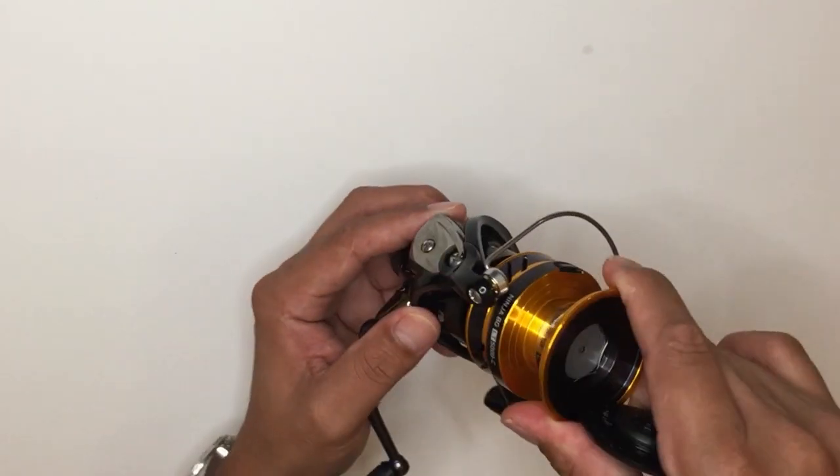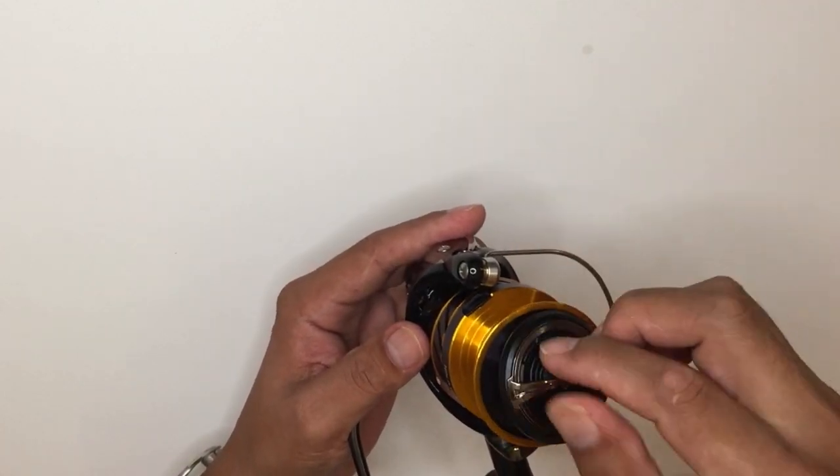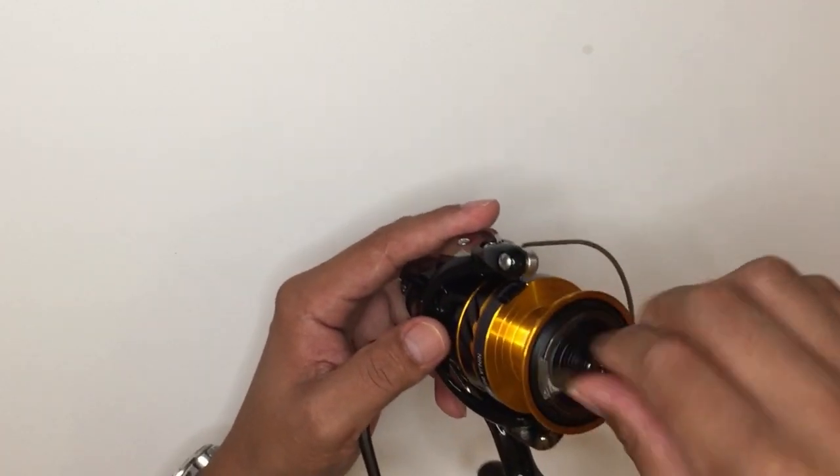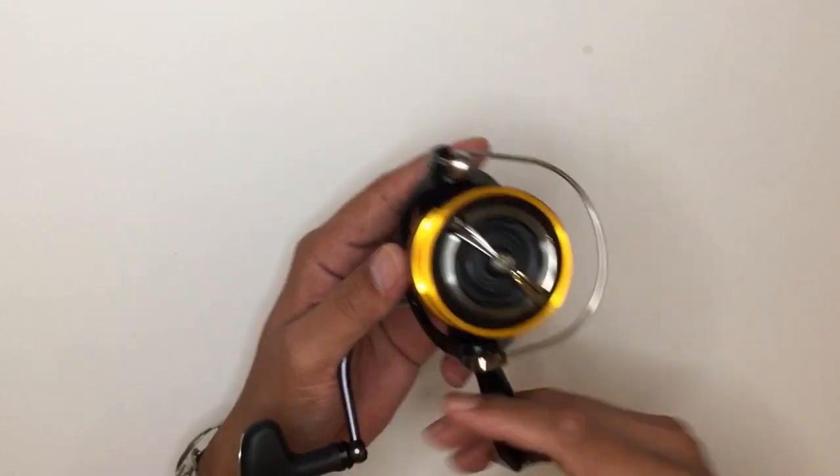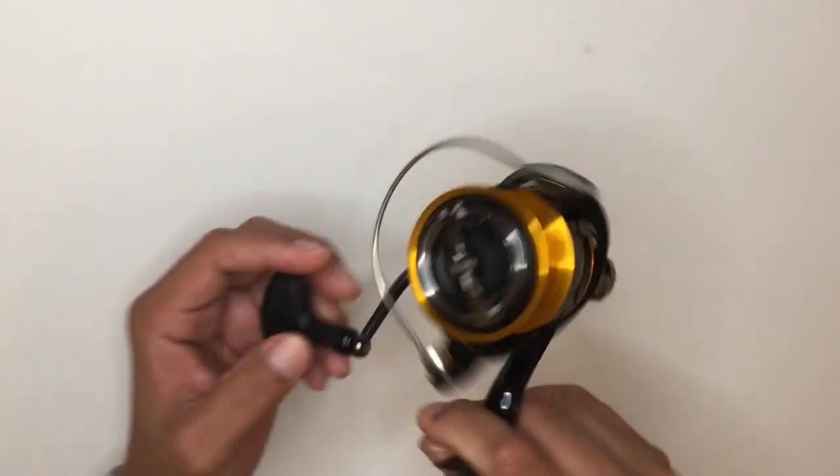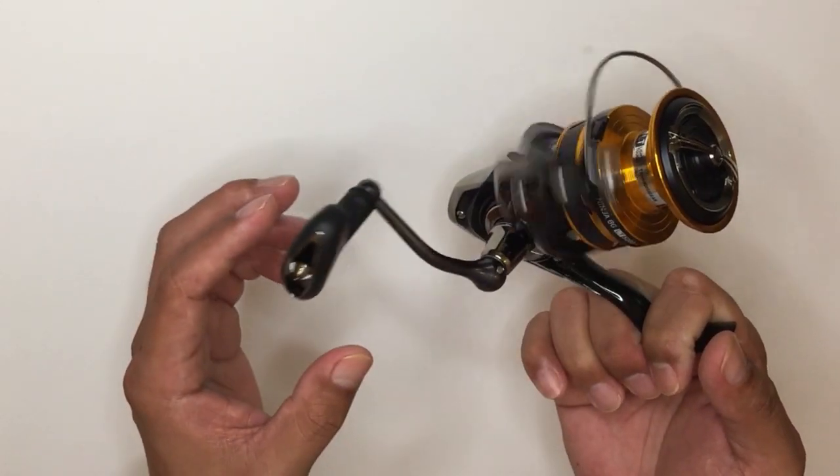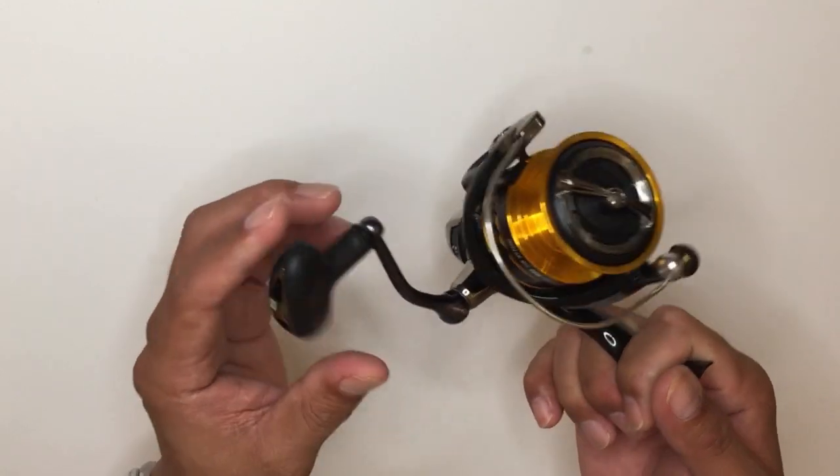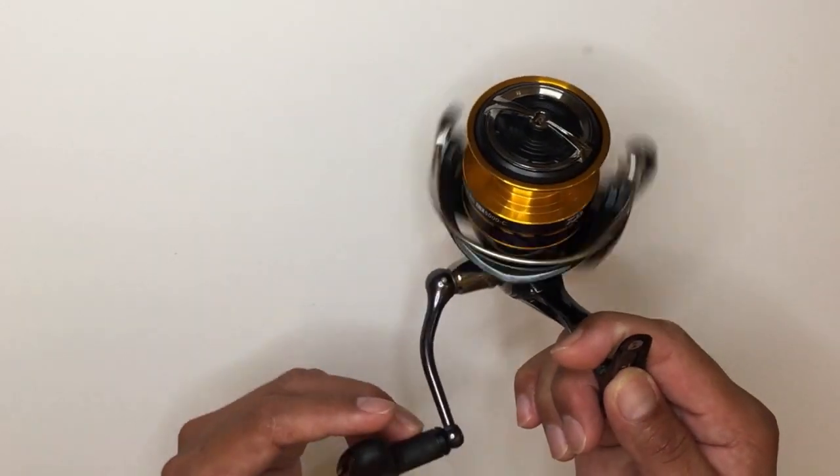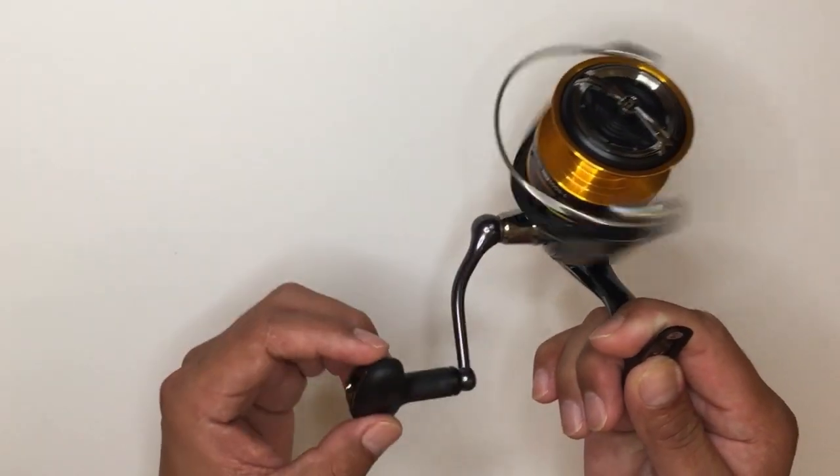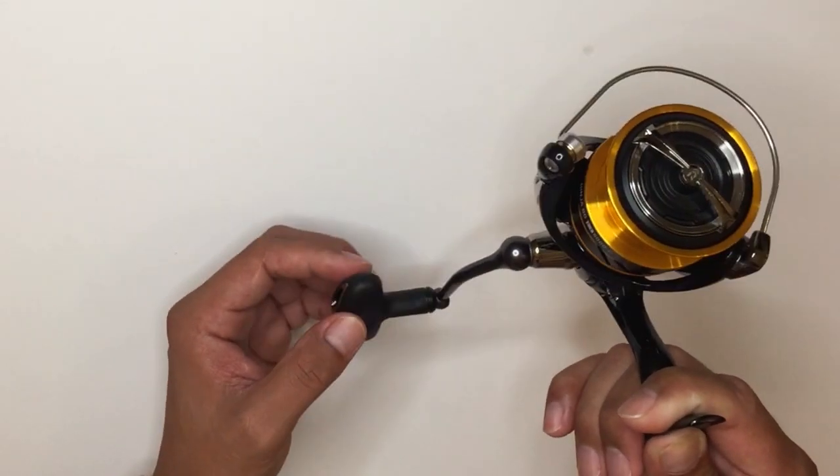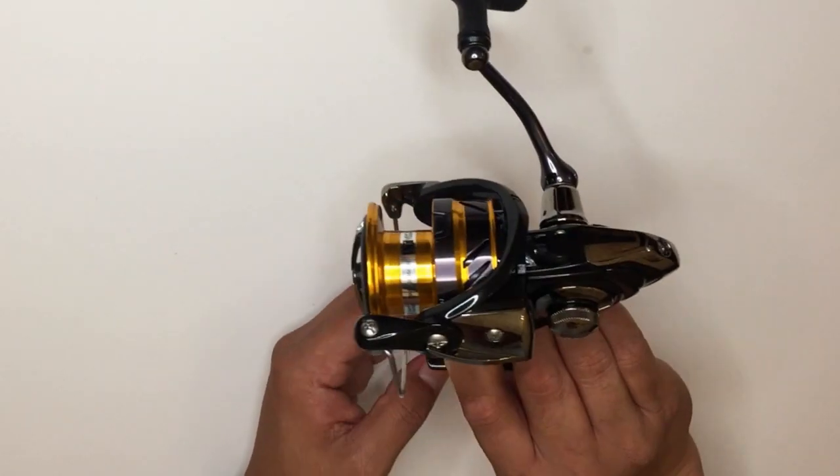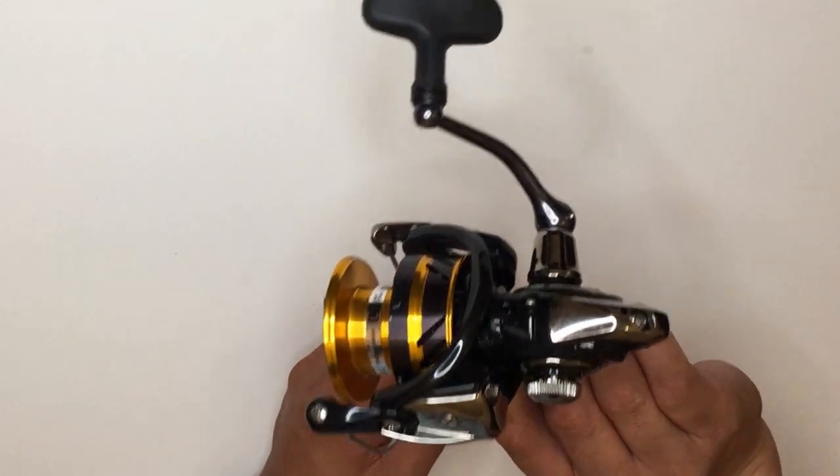The new Daiwa Ninja BG-LT is the successor of the legendary Ninja BG. The new LT model captures the eye aesthetically, but also functionally, and the best part lies in its price. Once again, the price is from $65 to $75, depending on the size you're going to take.